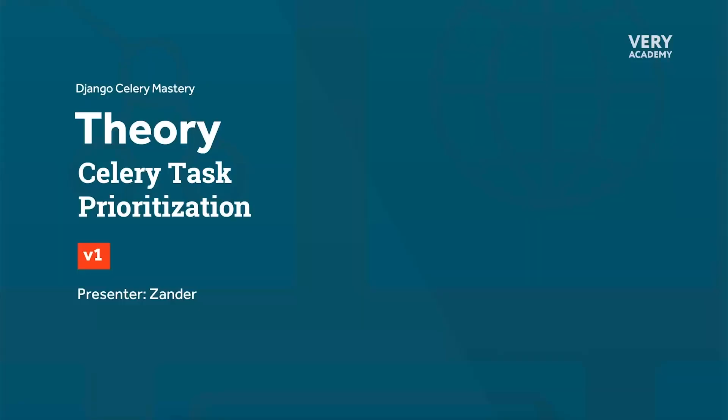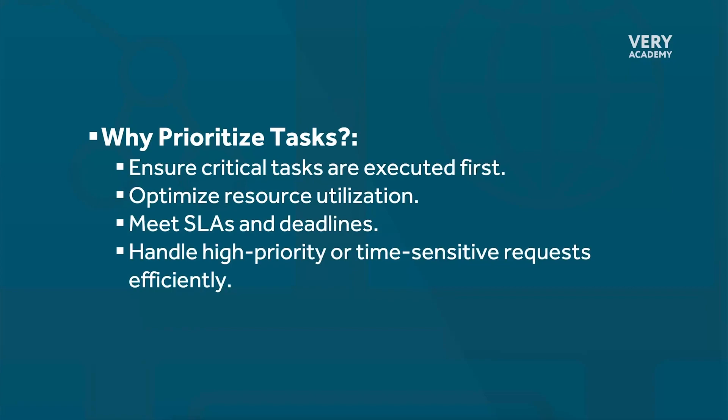Task prioritization is about managing the execution order and resource allocation of tasks. It allows us to define the relative importance or urgency of tasks so that critical tasks are handled promptly and resources are utilized efficiently. In the world of task management, prioritizing tasks becomes critical for various reasons, so let's explore why prioritization is essential and how it can be beneficial to the workflow.